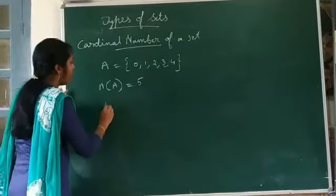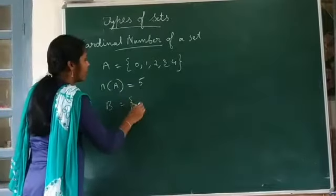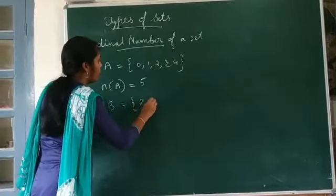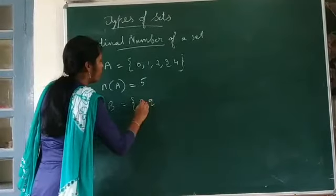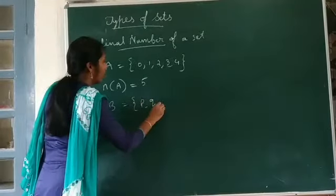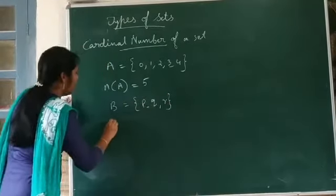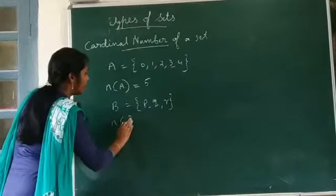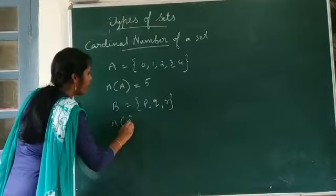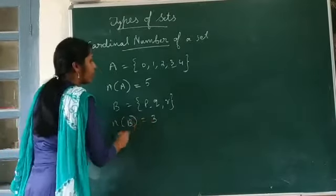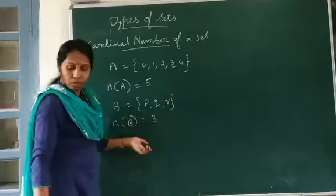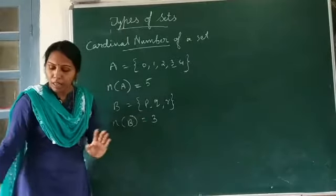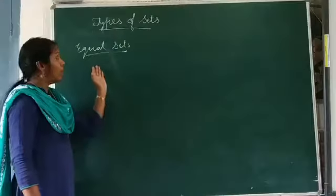Another example: B is equal to the set {P, Q, R}. In this, n(B) is equal to 3. This way we can define the cardinal number of a set.